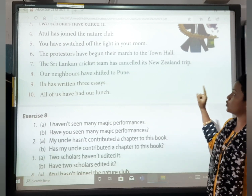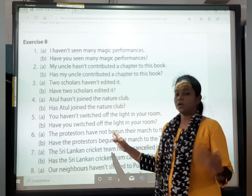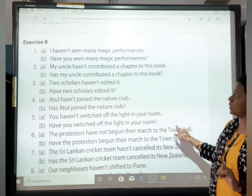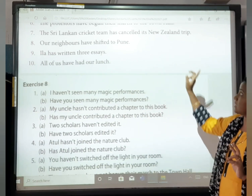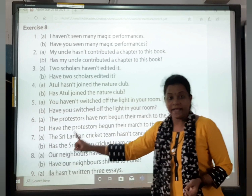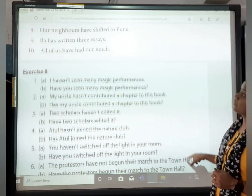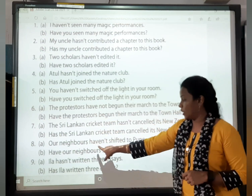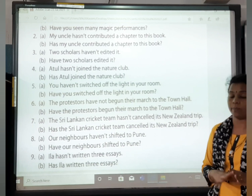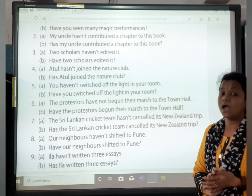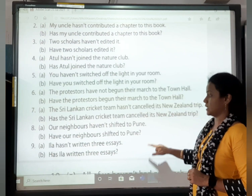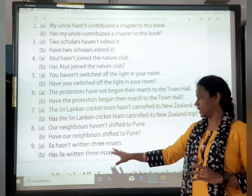The protesters have given their march to the town hall. Negative: The protesters have not given their march to the town hall — you can write haven't also, no problem. Question: Have the protesters given their march to the town hall? The Sri Lankan cricket team has cancelled New Zealand's trip. Negative: The Sri Lankan cricket team hasn't cancelled the New Zealand trip. Question: Has the Sri Lankan cricket team cancelled the New Zealand trip? Our neighbours have shifted to Pune. Negative: Our neighbours haven't shifted to Pune. Question: Have our neighbours shifted to Pune? Ila has written three essays. Negative: Ila hasn't written three essays. Question: Has Ila written three essays?